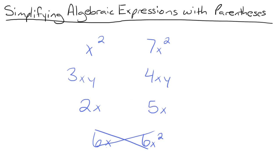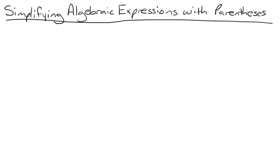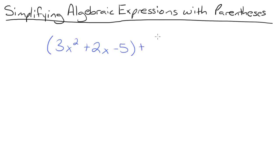Now that we've reviewed what like terms are, let's use this information to simplify some expressions. We're going to start with the expression 3x squared plus 2x minus 5, and add that to 7x squared minus 3x plus 14.